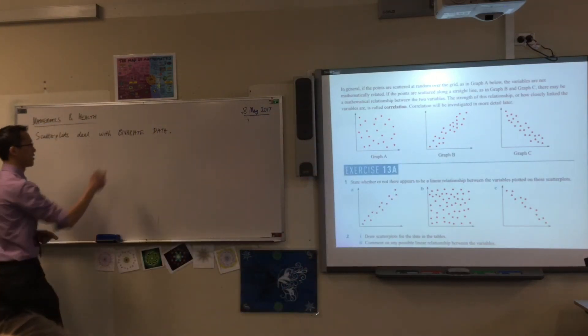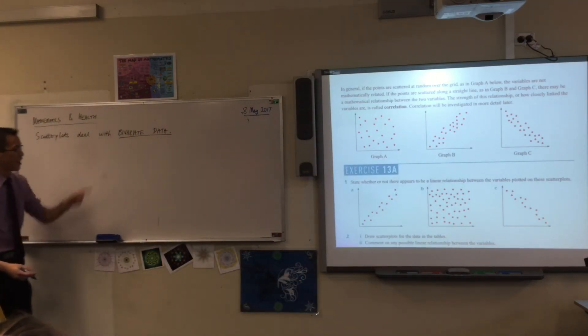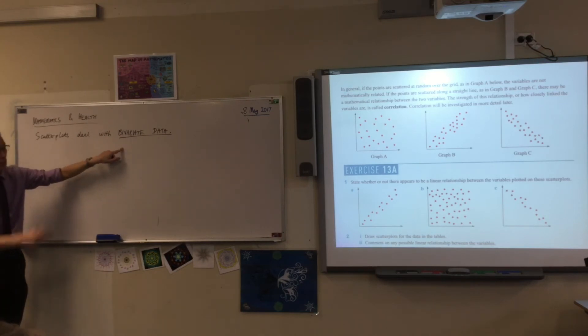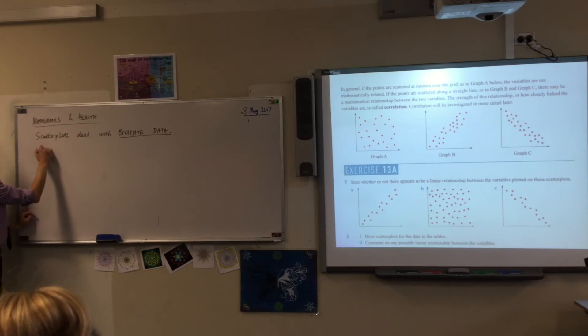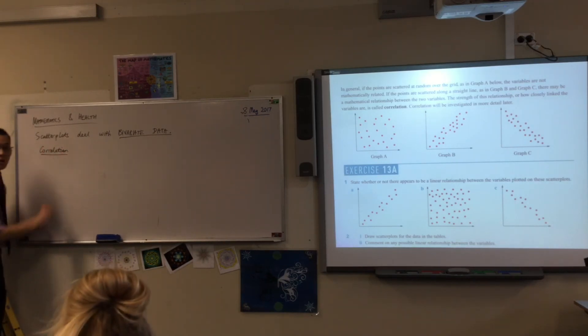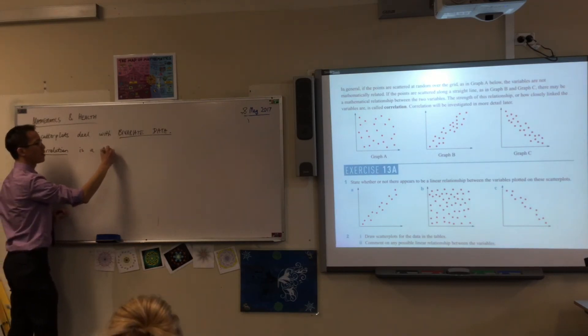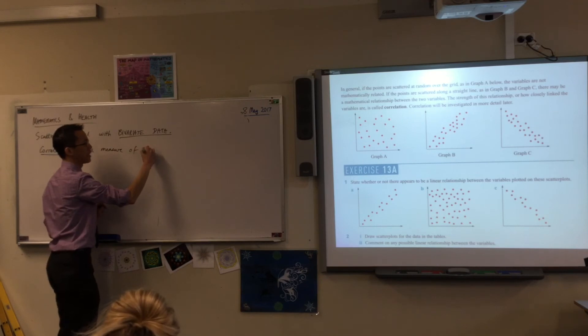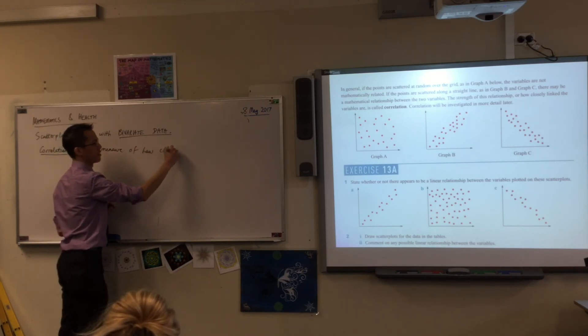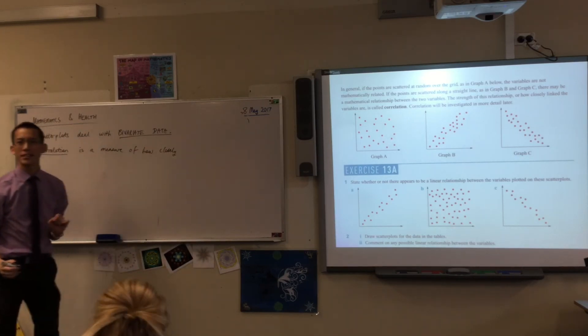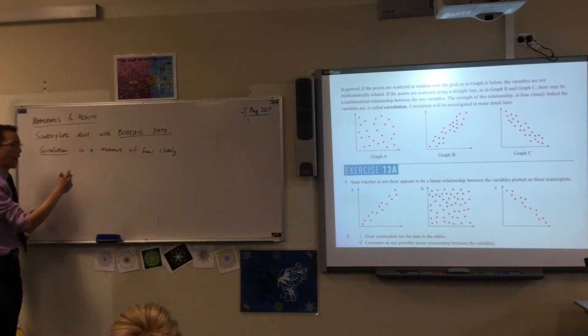So this connection, sorry, I'm overwhelming you with words today. Between the two variables is called correlation. Can you see it up there? So underneath where you've written this, I'd love you to write: Correlation is a measure of how closely related, this is bivariate data. So there are two variables. How closely are those two variables related?